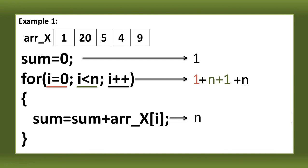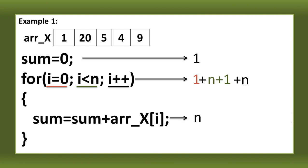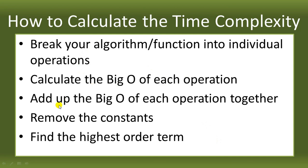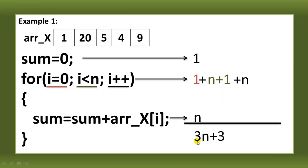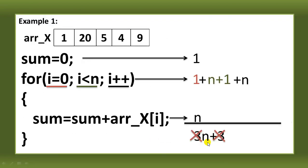After adding up the Big O of each operation, we remove the constants. In this example, the constants are the 3s. We remove them and what remains is n. Then we find the highest order term — since only n remains, it is the highest. So we can say that the time complexity of this algorithm is O(N).